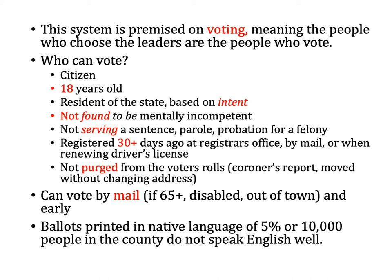So who can vote in Texas? You have to be a citizen, 18 years of age, and a resident of the state based on intent. What this means is that if you have a house in Texas and a house in Florida and spend most of your time in Florida, if you consider yourself a Texan and intend to be a resident of Texas, you can still vote in Texas. You can't vote in both Texas and Florida, but you can register in Texas because your intent is to be a resident of that state. There's no rule saying your feet must be on Texas soil for a certain number of days to be considered a resident for voting purposes.